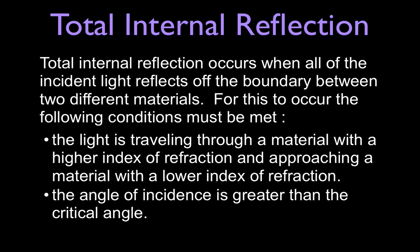Total internal reflection occurs when all of the incident light reflects off of the boundary between two materials — none of the light crosses the boundary, it's all totally internally reflected. For this to occur, two conditions must be met: the light needs to be traveling through a material with a higher index of refraction and approaching a material with a lower index of refraction, and the angle of incidence has to be greater than the critical angle.